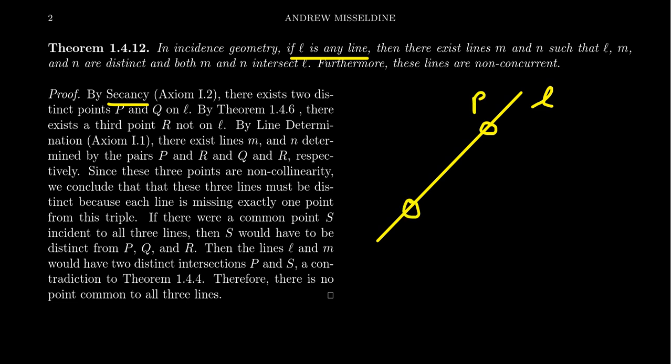These points will be distinct. We'll call these points P and Q. Now, by Theorem 1.6, which in the previous lecture, Theorem 1.6 said if you have two points P and Q that are distinct, there exists a third point R such that the set P, Q and R are non-collinear. So, in particular, R is not on L because P, Q and R are not collinear. Now, using line determination, there exists a unique line between P and R and a unique line between Q and R like so.